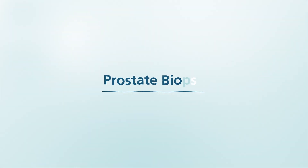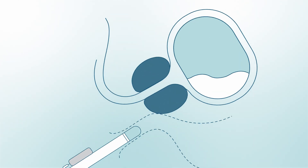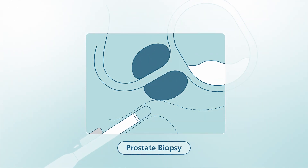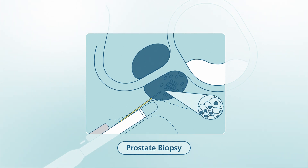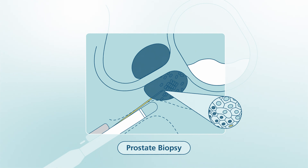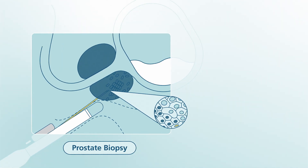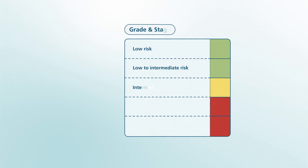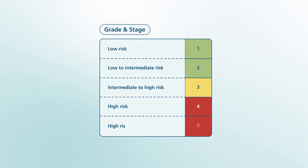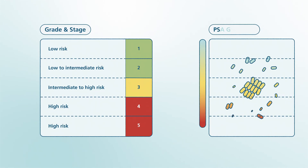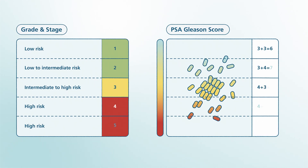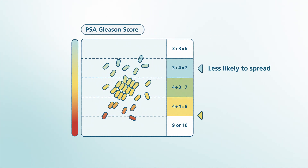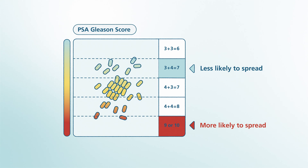Biopsy. A biopsy involves taking tissue samples to find cancer cells. Samples of prostate tissue are removed through a needle for review under a microscope to see if they contain cancer or other abnormal cells. If cancer cells are found, an expert called a pathologist will grade and stage the tumor. The grade may range from 1 to 5. A Gleason score may also be provided, which ranges from 6 to 10. A lower score means the cancer is less likely to spread.